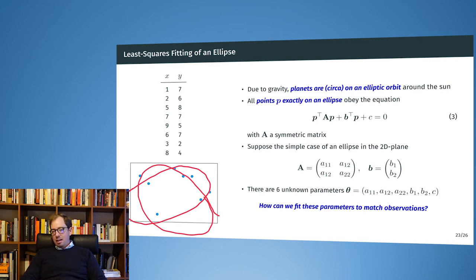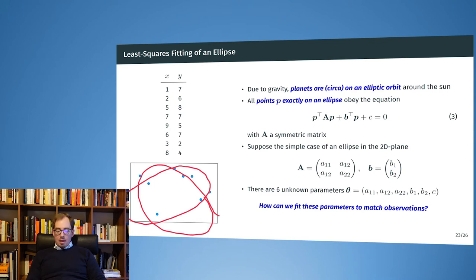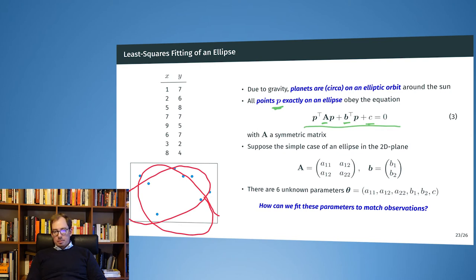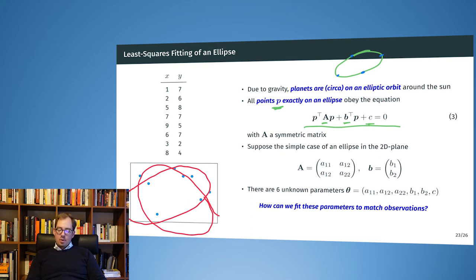What Gauss did was quite different — this is only motivated by that case but the general idea translates over. Due to gravity we know that planets are on an elliptic orbit around the sun. For points P exactly on the orbit of an ellipse, there must be a matrix A, a vector B, and a scalar C such that this overall expression evaluates to exactly zero for all points on the ellipse.